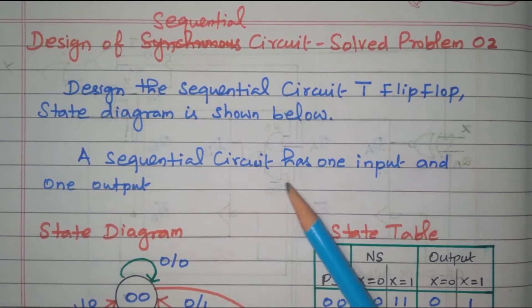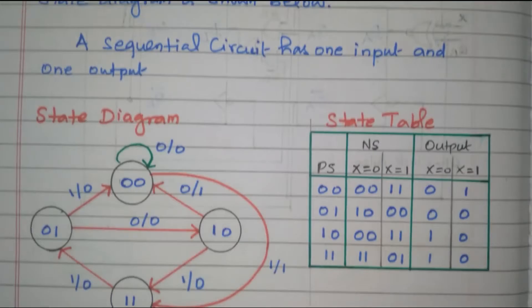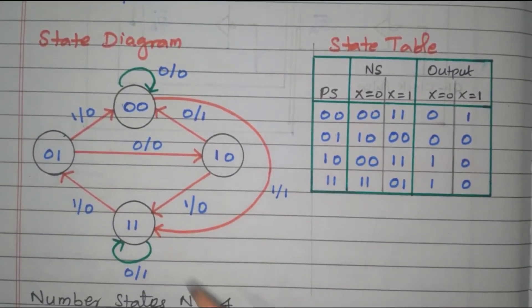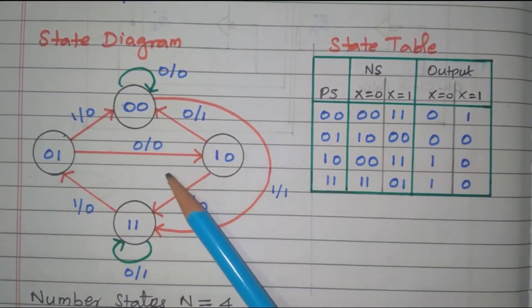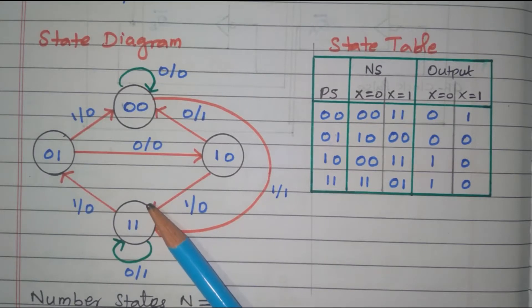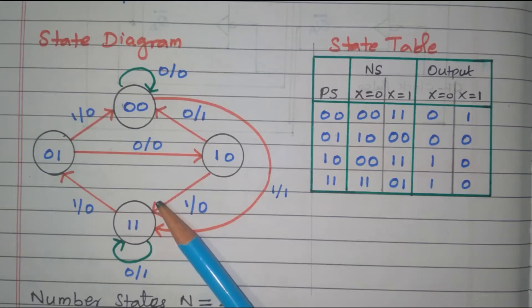The sequential circuit has one input and one output. Now we will see the state diagram given in the problem. From that we need to develop the state table, design of the T flip-flop, and reduction of the expression. That expression is then implemented with the logic diagram.